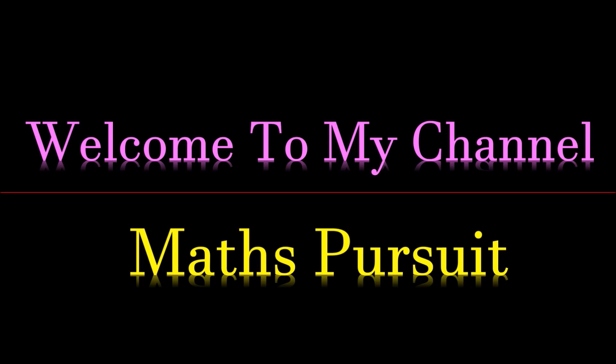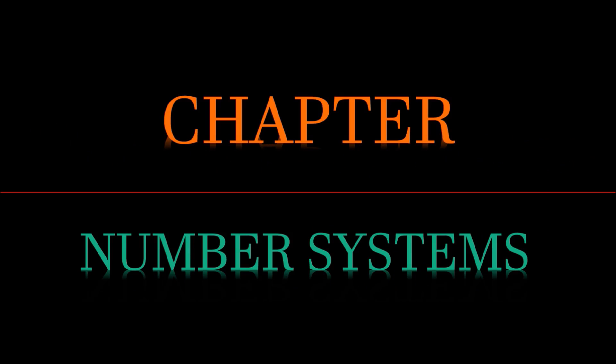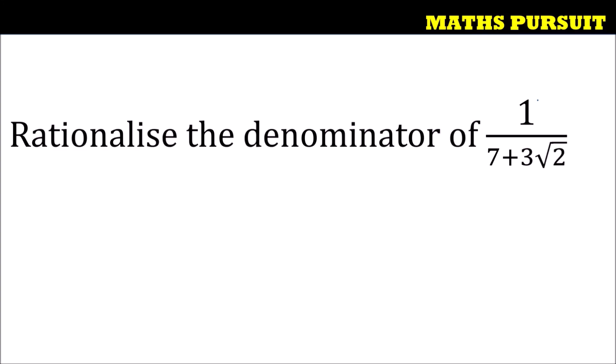Welcome to my channel Maths Pursuit. Today we will look into questions from the chapter called Number Systems. The given question is: rationalize the denominator of 1 upon 7 plus 3 root 2.